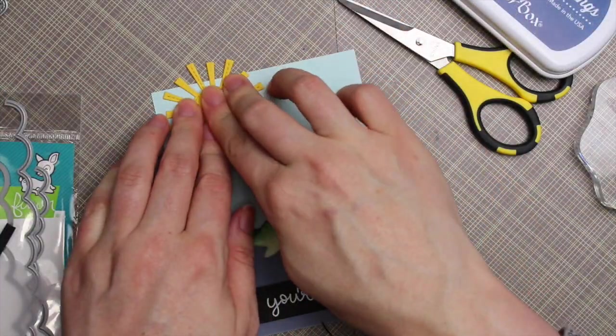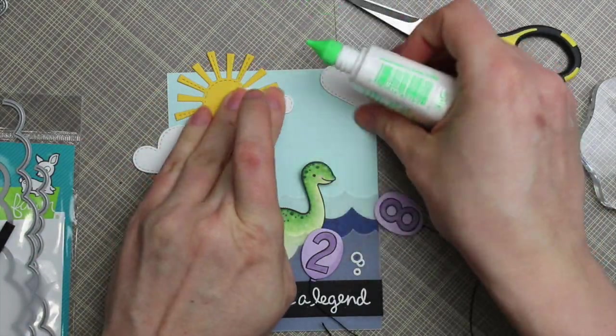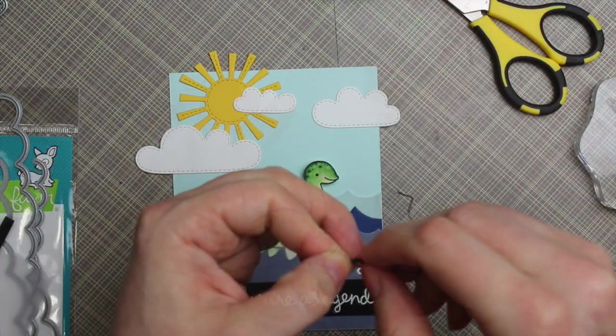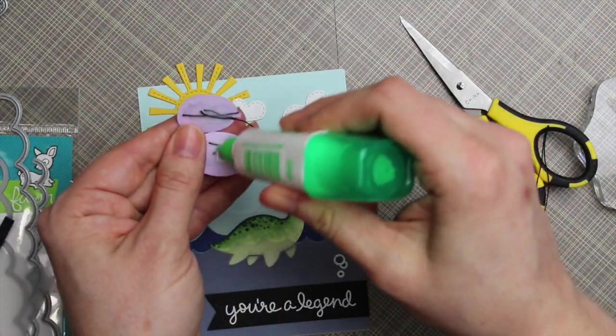So once I was done that, I folded the sentiment over to the back of the card. And then I adhered down that little die cut sun and the die cut clouds and then tied the string or the thread for the balloons into a knot.